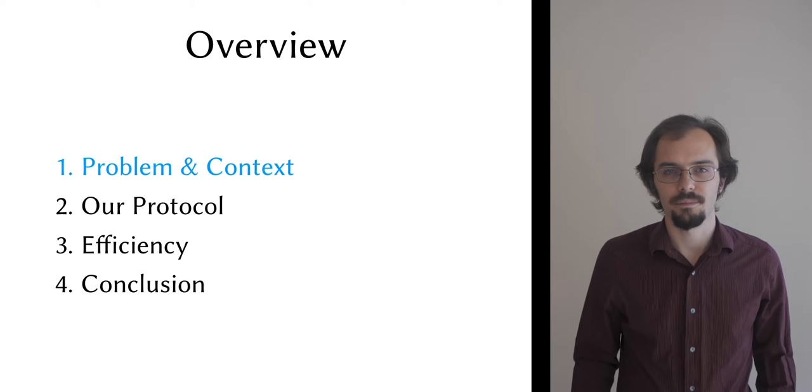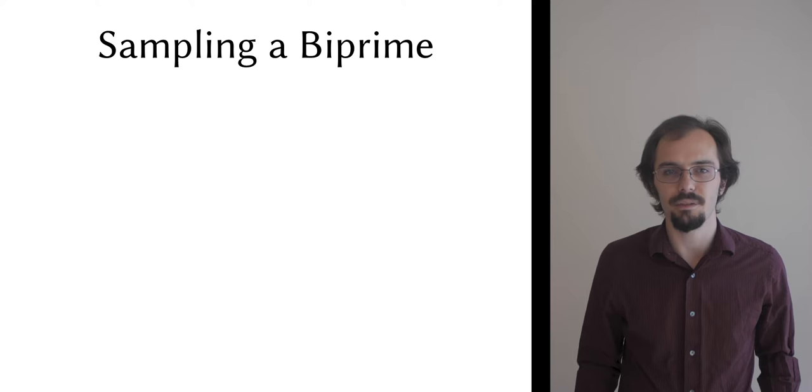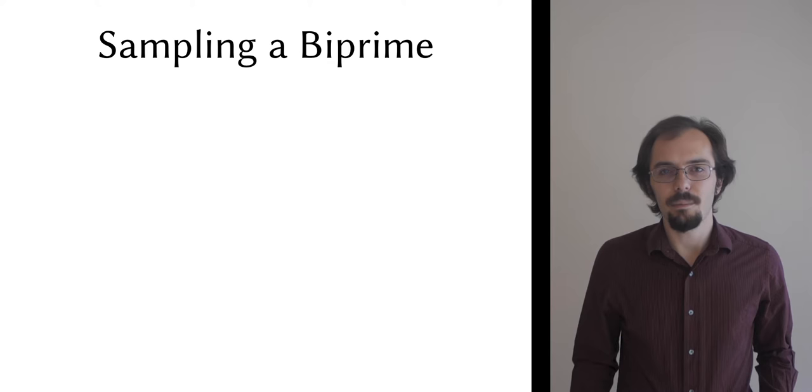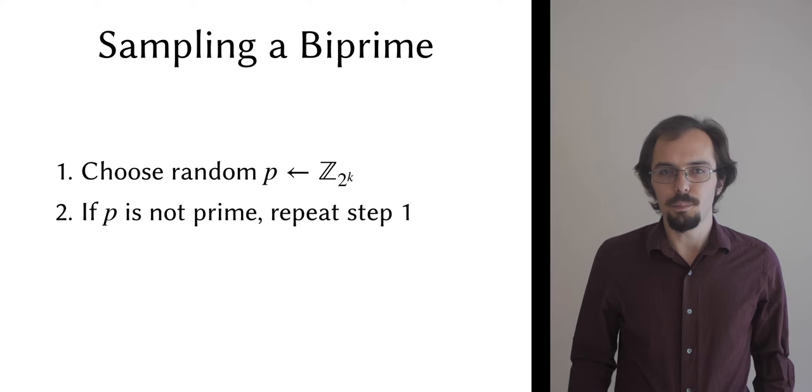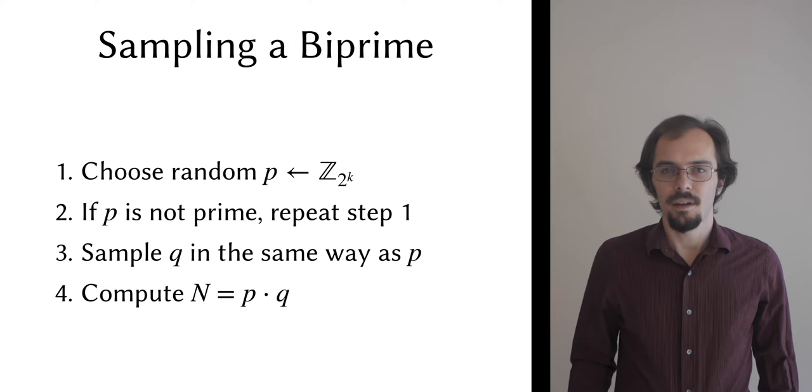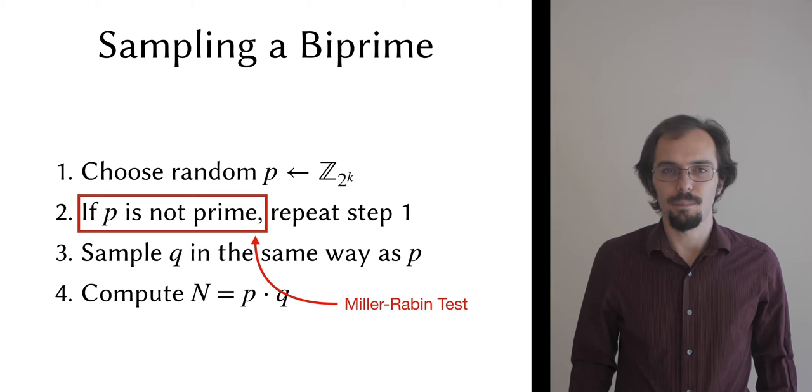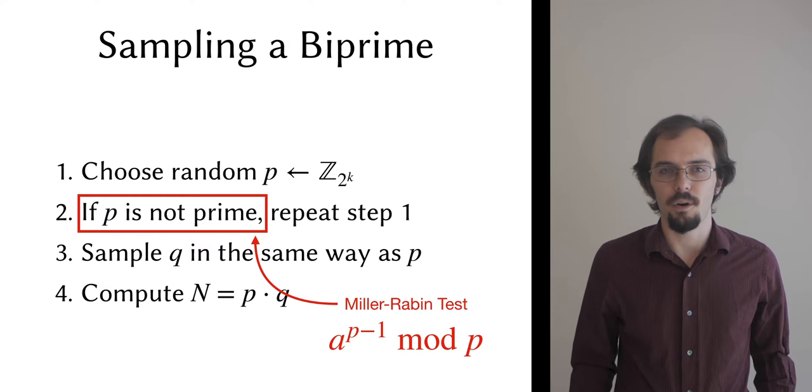Now I claim that generating an RSA biprime using a multiparty protocol is uniquely difficult relative to multiparty key generation for other kinds of cryptosystems, and that's because we sample biprimes by rejection. That is, we pick a k-bit number where k is a security parameter, test whether it's prime, and throw it away if it's not. When we find two primes p and q, we multiply them together to form a 2k-bit biprime n. Primality is usually determined via the Miller-Rabin test. I'm not going to show it to you in detail, but the important thing to know is that it requires us to repeatedly take a random base a to some secret power modulo p. Turning this into a multiparty protocol naively would require many secure modular exponentiations with large secret moduli, and this is very, very far from practical.